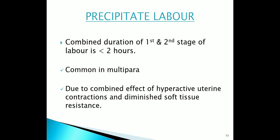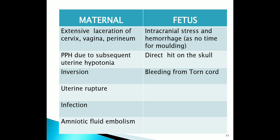Now come to precipitate labor. A labor is called precipitate when the combined duration of the first and second stage is less than 2 hours. It is common in multipara and may be repetitive. Rapid expulsion is due to the combined effect of hyperactive uterine contraction associated with diminished soft tissue resistance. Labor is short as the rate of cervical dilatation is 5 cm per hour or more for nulliparous women. Maternal risks include extensive laceration of cervix, vagina, perineum, postpartum hemorrhage due to subsequent uterine hypotonia, inversion of uterus, uterine rupture, infection, and amniotic fluid embolism. Fetal risks include intracranial stress and hemorrhage as there is no time for molding, direct impact on the skull, and bleeding from torn cord.